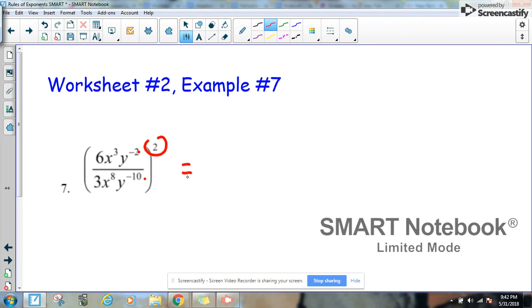What that's going to mean is if you use rule 6, which states if you raise a quotient to a power, you just simply raise the numerator to that power, and you also raise the denominator to that power. So we're going to do everything raised to the power of 2.